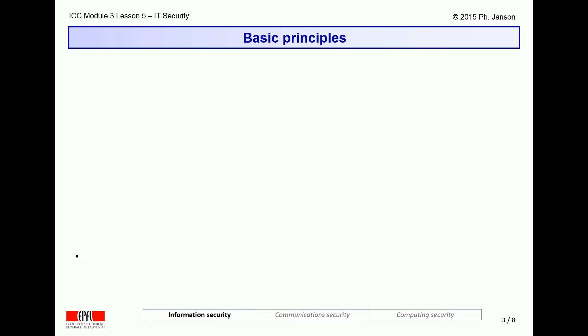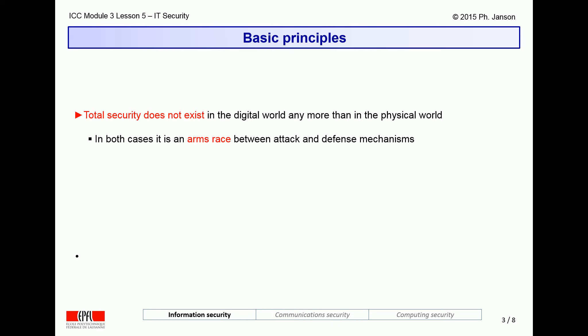Let us start with basic principles. A first principle to always keep in mind is that total security does not exist in the digital world any more than it does in the physical world. In both cases, it is always an arms race between attackers and defenders, where defenders always try to develop stronger weapons to mitigate attacks, whereas attackers always try to develop better weapons to defeat defenses.